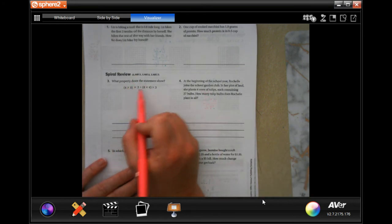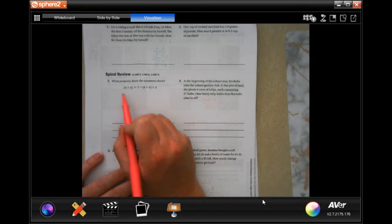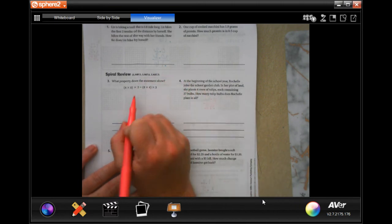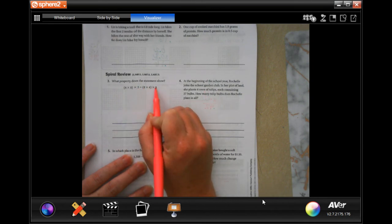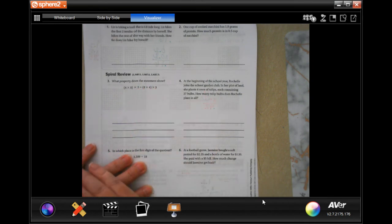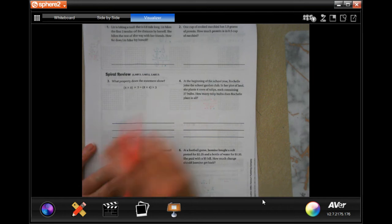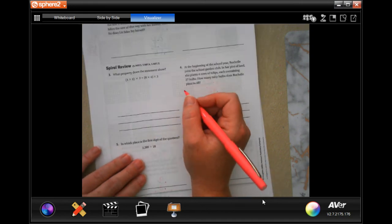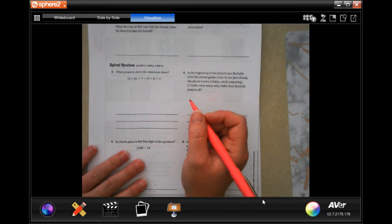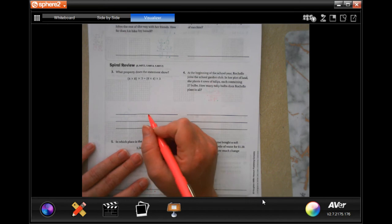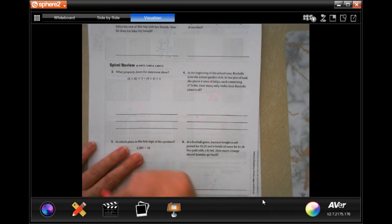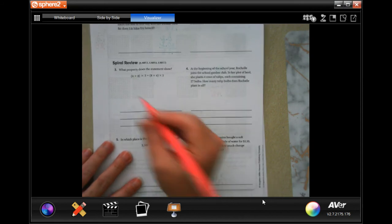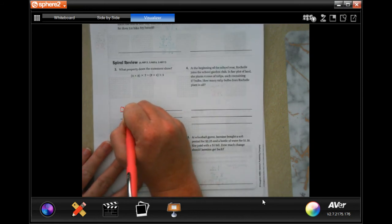So, what property does the statement show? You will notice that our numbers are the same three numbers. 4, 8, and 3. 4, 8, and 3. The numbers are exactly the same. The parentheses are around the same two numbers, but the numbers move. Well, when the numbers move, it's like when you go to work, you are commuting to work. When you go to school, you are commuting to school. When you leave home and go somewhere else, you are commuting. That makes this the commutative property.